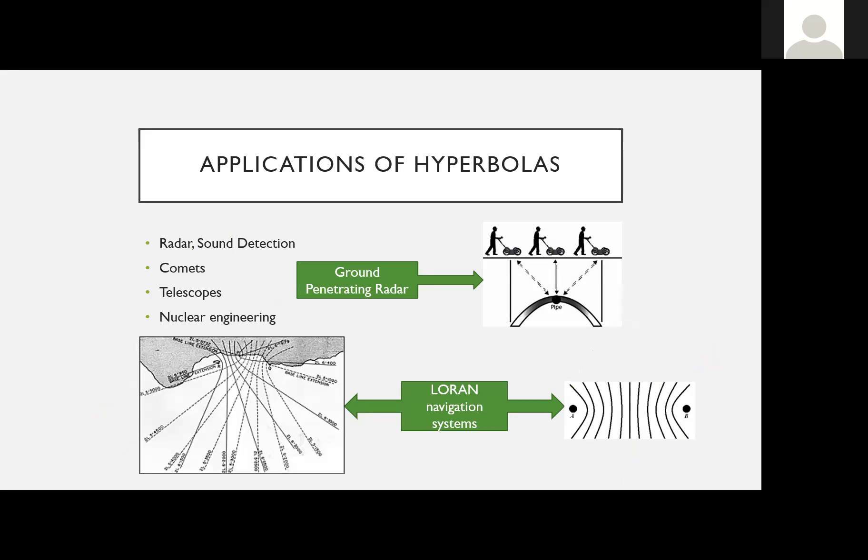Hyperbolas are used a lot in radar and sound detection — anything where you're bouncing something off a surface, like sound waves or light. Ground penetrating radar bounces waves to find things underground; as you walk over a pipe location, your resulting image from the radar will actually form a hyperbola. Usually these form only one branch, so they can look like a parabola, but they're not.